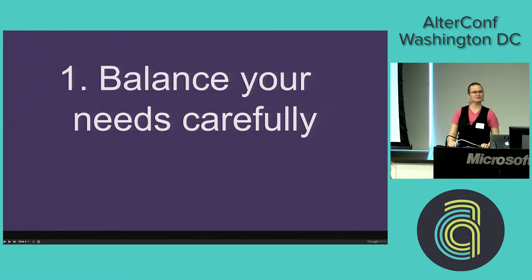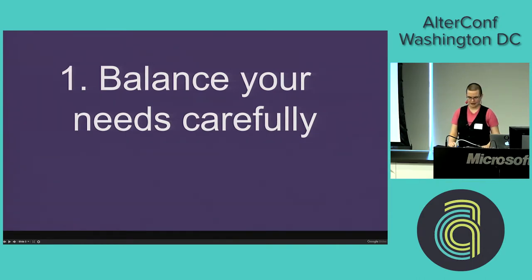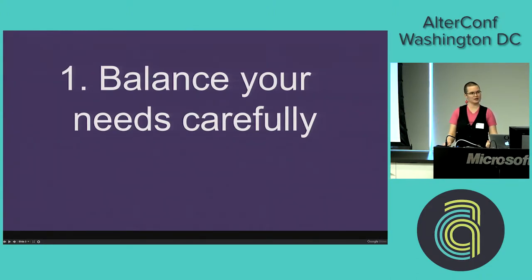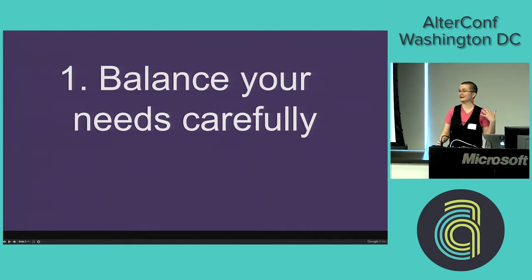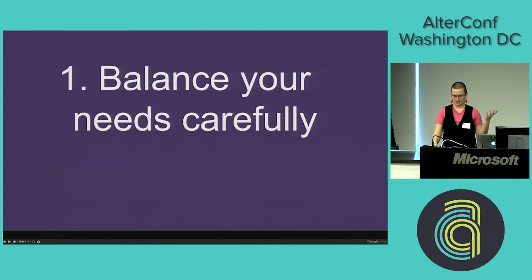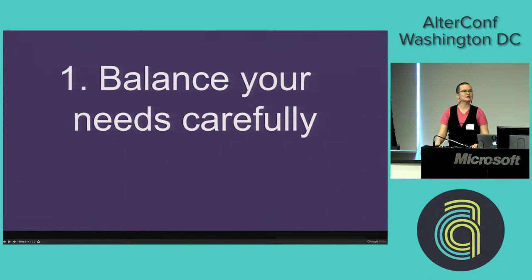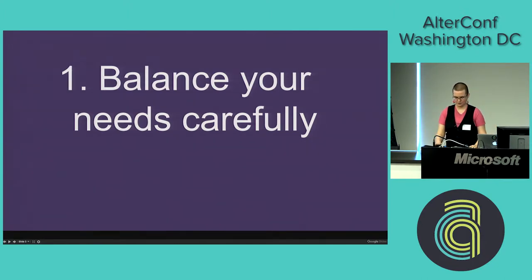Step number one: balance your needs carefully when you're collecting personal data. There's no one right answer for how to make your data more trans-inclusive. You really have to come from a purpose-driven approach and ask yourself why you are collecting data in the first place. Think about what your present and future needs are. Are you collecting data to contact people, to enhance their user experience, to assist them legally, to publish data about them, to target them for programming, or to do analytics? Can you imagine a future world where your data needs might actually increase?